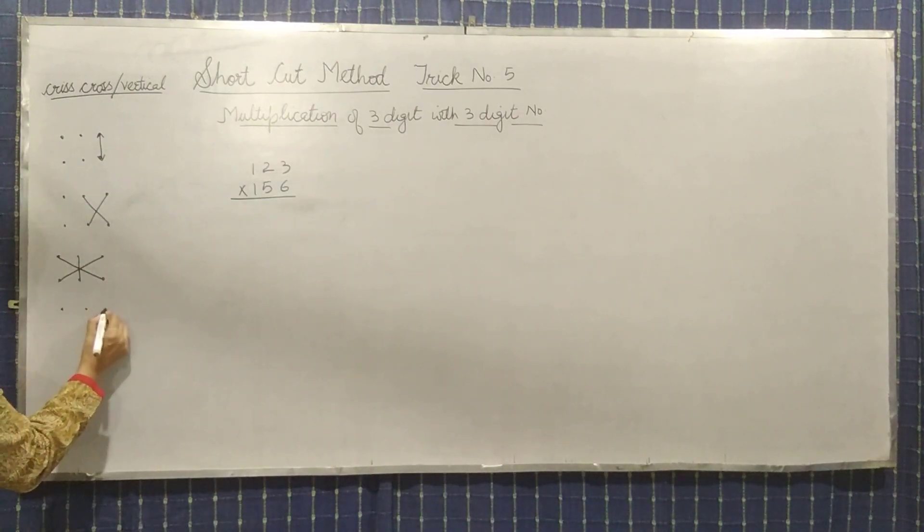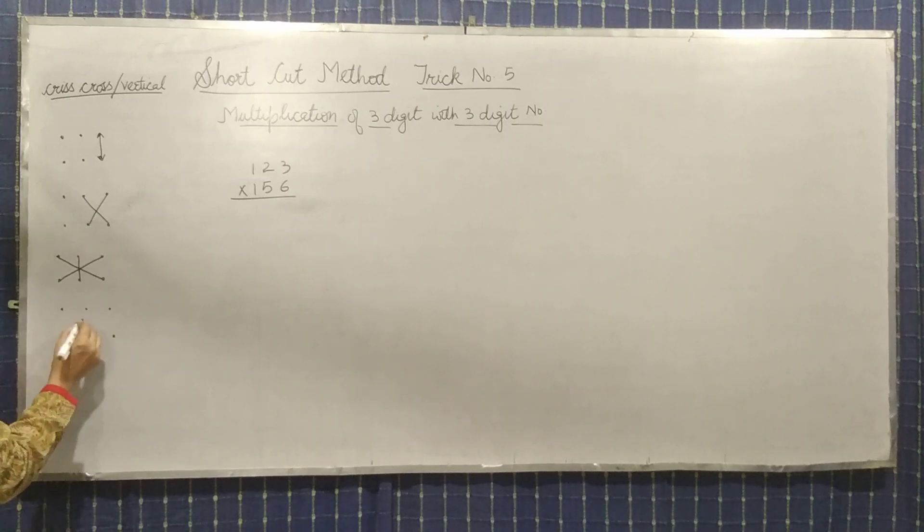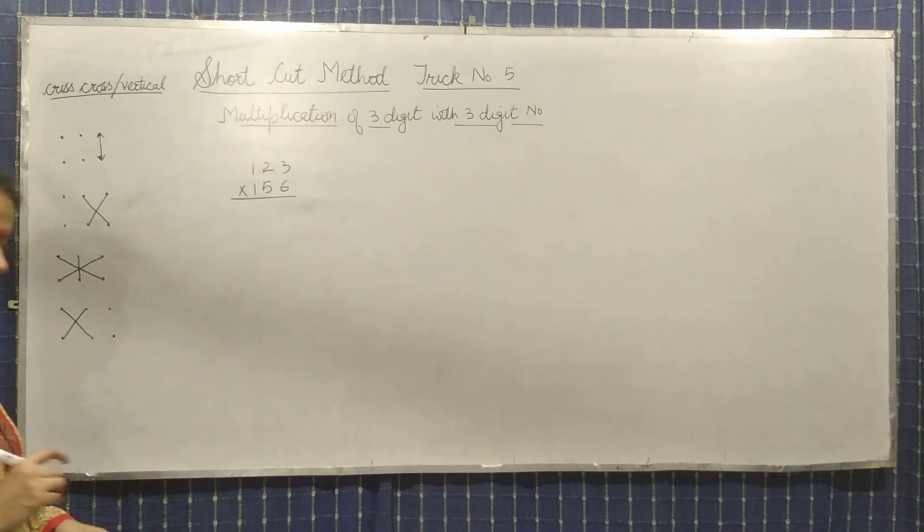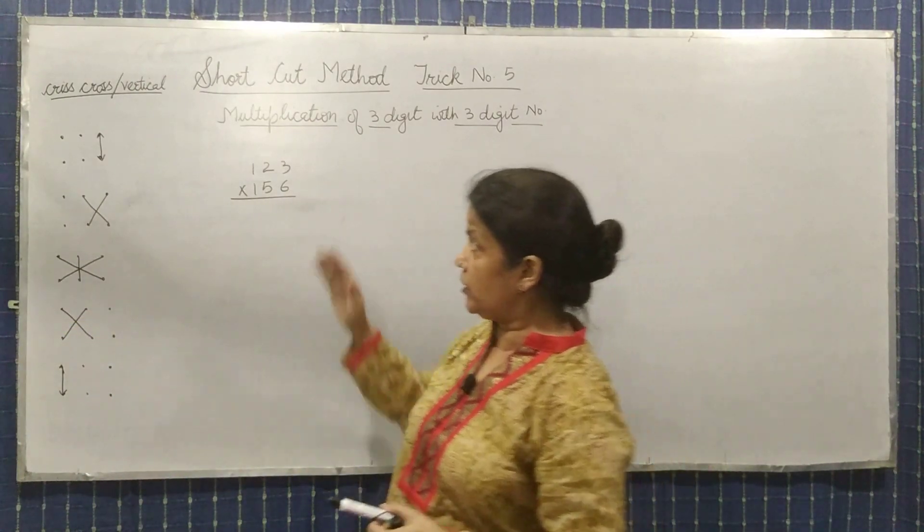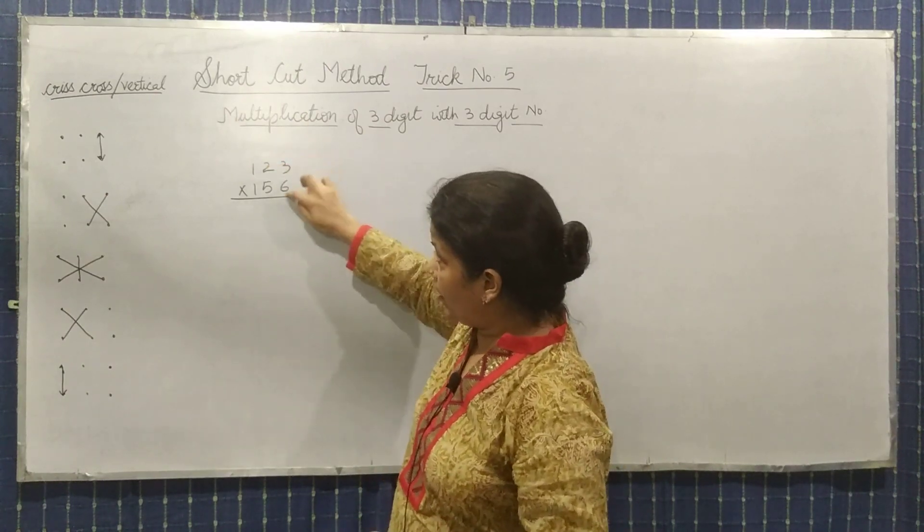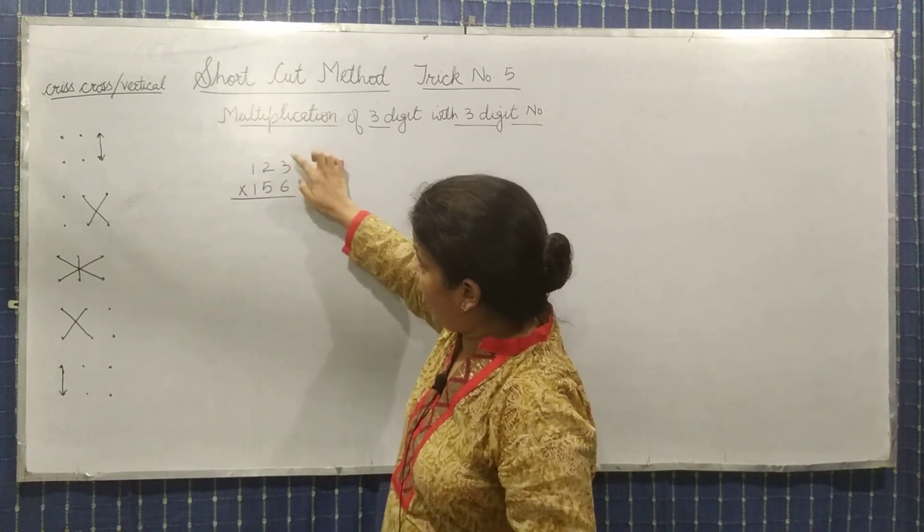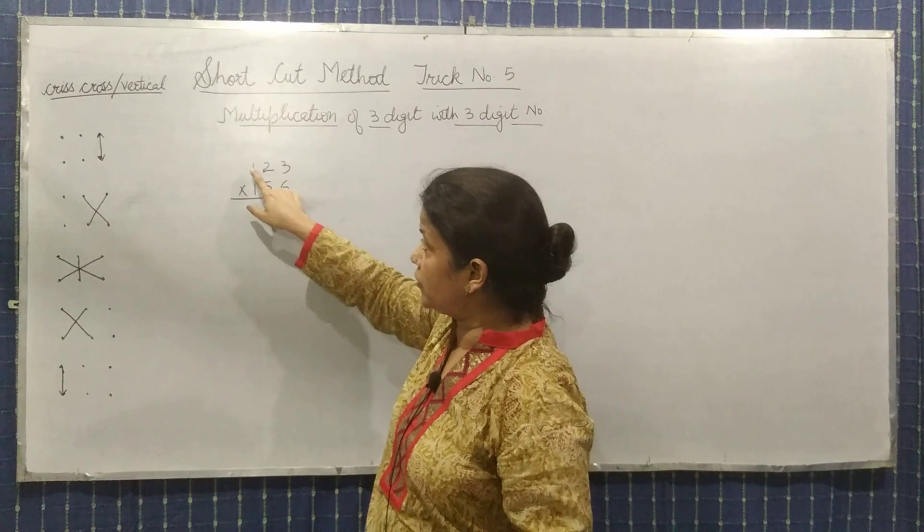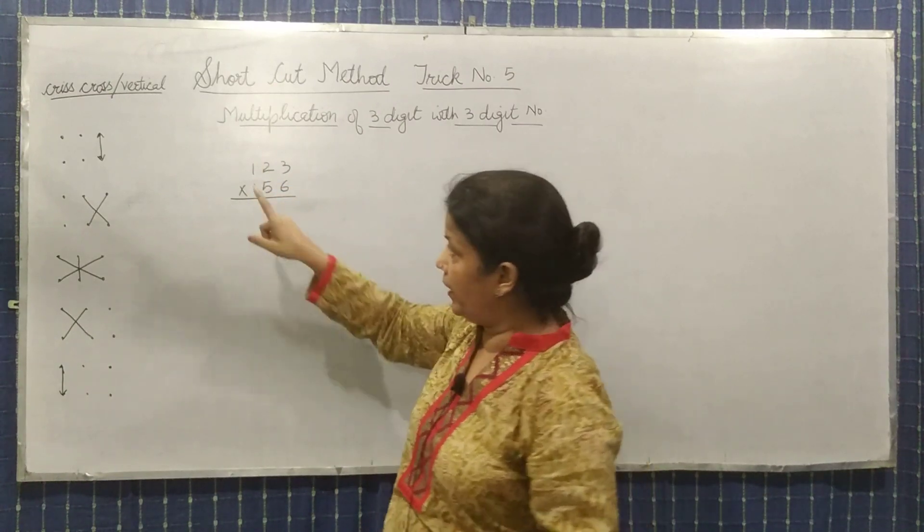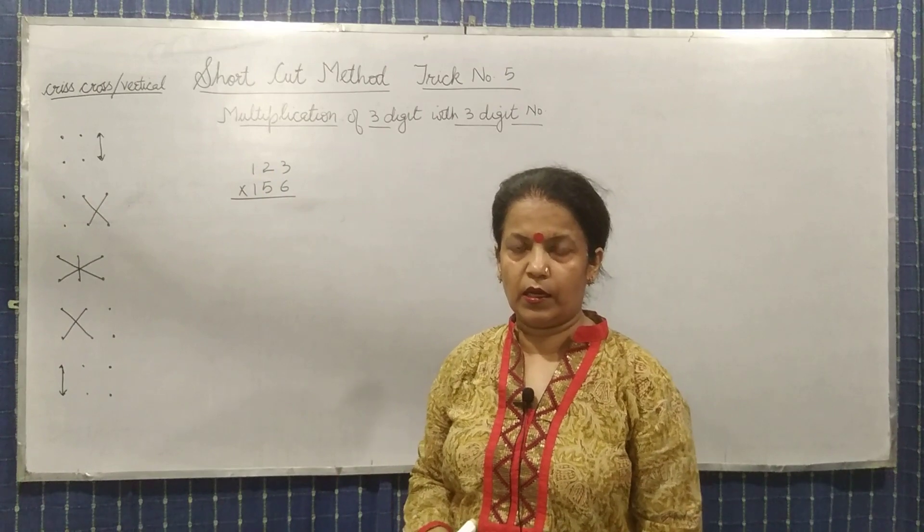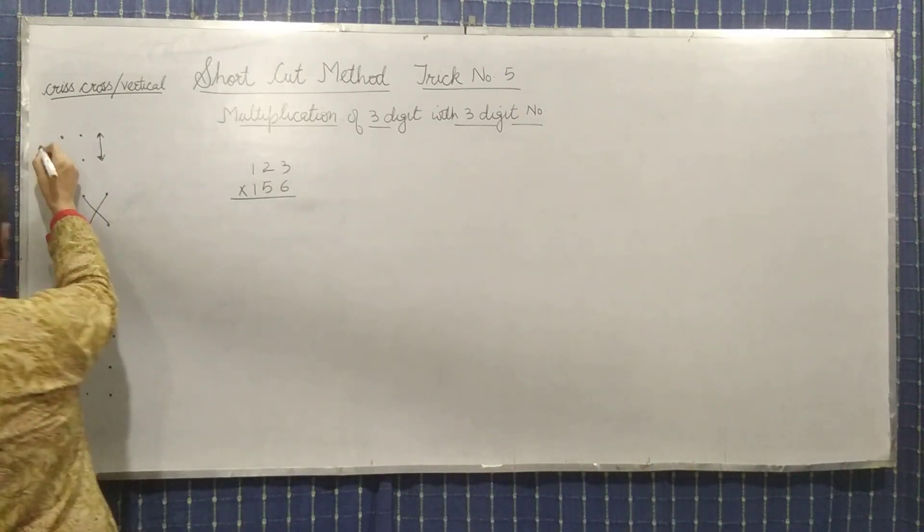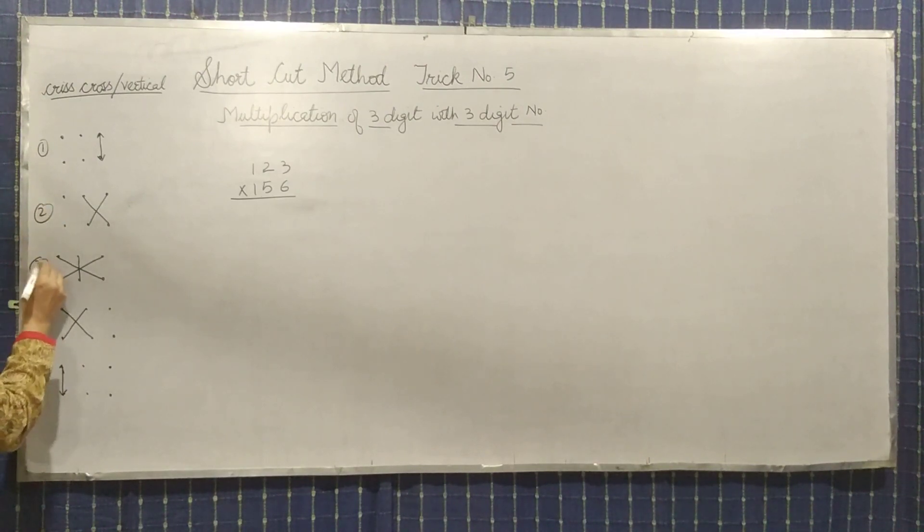In the third step, you will again do the cross. You'll cross multiply these two and multiply this as vertical. After multiplication, you will add them. In the fourth step, you'll cross multiply the last two. In the next step, multiply these two vertically. So first step vertically, then cross, then cross and this one vertical, third and fourth step multiply vertically, and in last step vertically multiply.